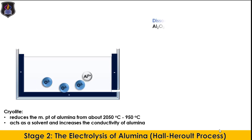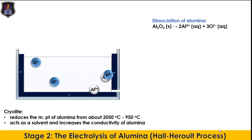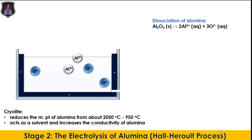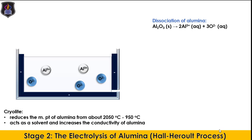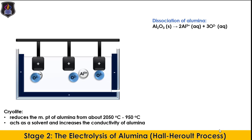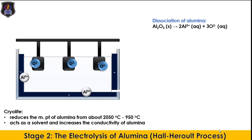Before the electrodes are connected to the power supply, the ions in the molten alumina move randomly after dissociation. On connecting the electrodes, there is a migration of ions based on the electrostatic law of attraction. The oxide anions migrate to the positively charged anode, while the Aluminium cations migrate to the negatively charged cathode.